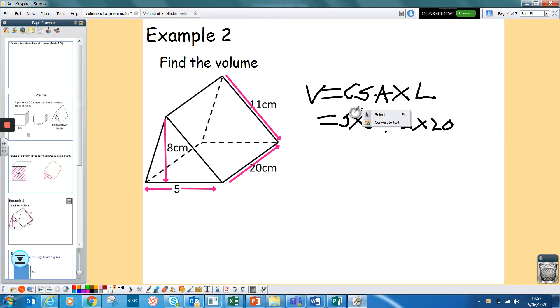So that's my cross sectional area. And then I'm going to times that by the length. And the length of this one is 20. So hopefully, as you can see, this 11 has not been used. Remember, you don't always have to use everything that's on the diagram. So working this bit out, 5 times 8 is 40 divided by 2 is 20. So then that leaves me with 20 times 20, which is 400.